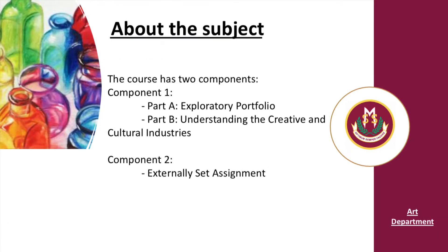GCSE Art and Design is divided into two components. Component 1 will be completed in Year 11 and consists of two parts: Part A is your exploratory portfolio and Part B is understanding the creative and cultural industries. Component 2 will be completed in Year 12. It is an externally set assignment. You will be issued a paper from SQA and it will have a theme or a question, which you will respond to and complete a final outcome.